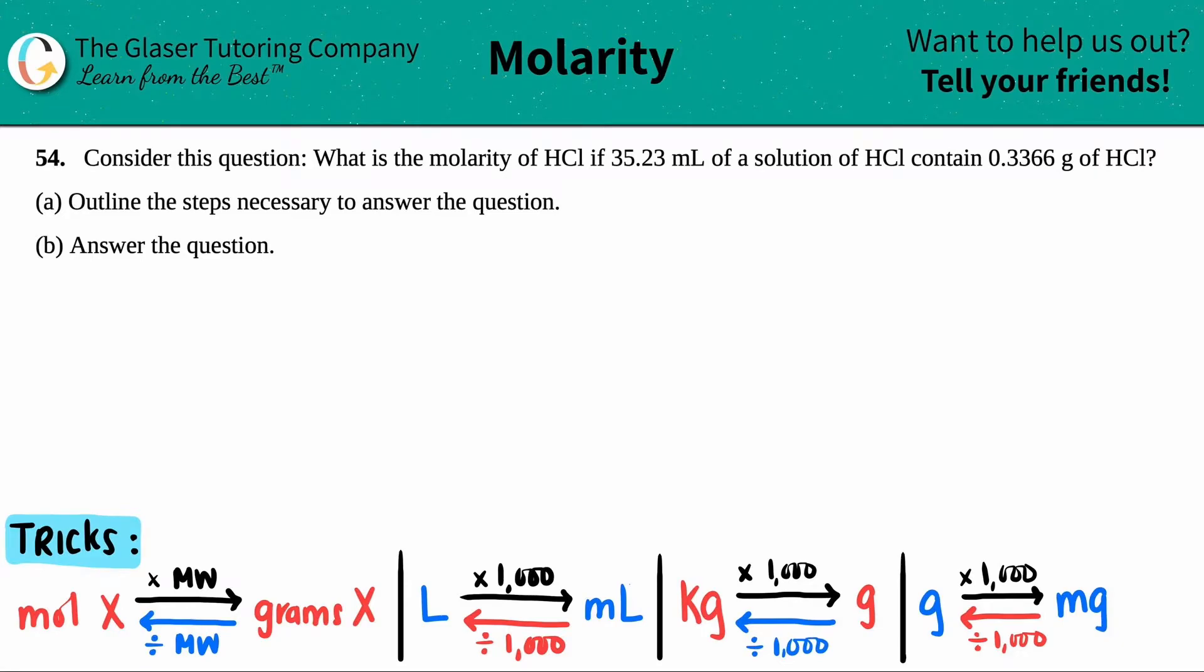Number 54. Consider this question: What is the molarity of HCl, so hydrochloric acid, if 35.23 milliliters of a solution of HCl contains 0.3366 grams of the HCl? We need to outline the steps necessary to answer the question, and then we have to answer the question.